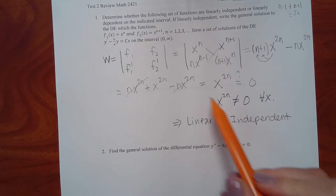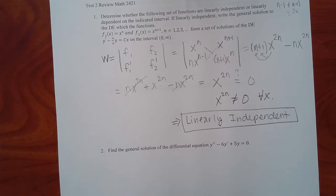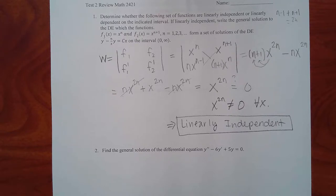Be careful — this is how you verify; you can't just guess. You have to show the Wronskian calculation. A memory tip: if the Wronskian equals zero it's dependent, if it's not zero it's independent. Write that on a flash card: zero means dependent, not zero means independent.